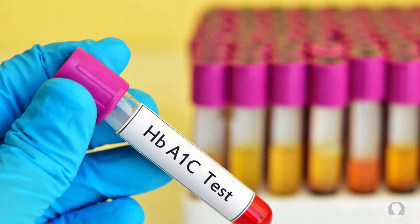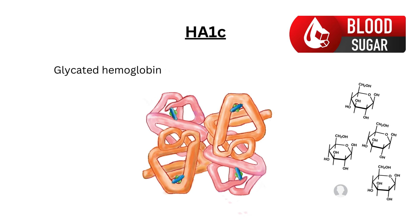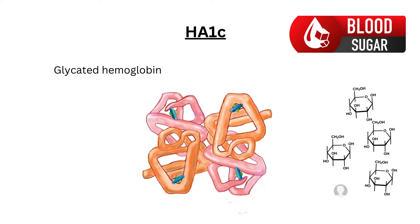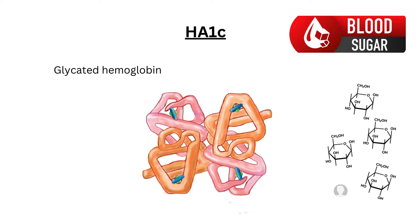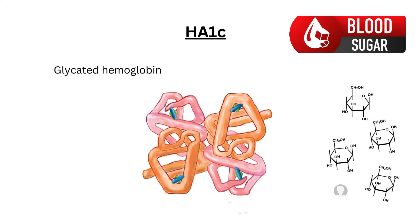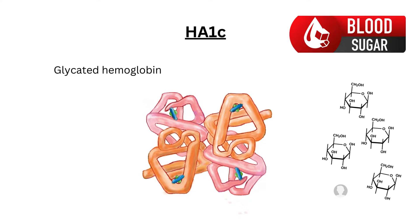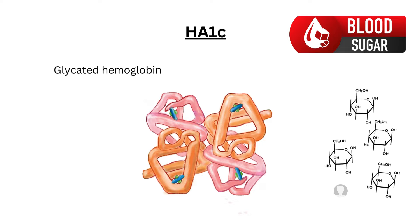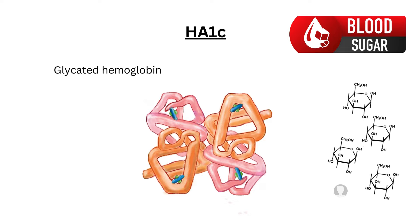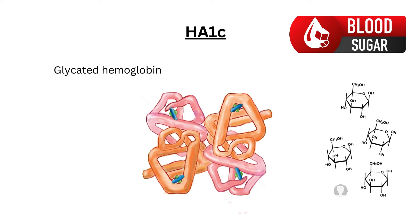Hemoglobin A1c is especially interesting in discussions of monitoring glucose levels in diabetes and prediabetes. In our blood circulation, a small percentage of hemoglobin A is glycated, with glucose molecules added to the end terminal of beta hemoglobin chains, forming hemoglobin A1c. Elevation of hemoglobin A1c reflects two to three months of elevated blood glucose levels.